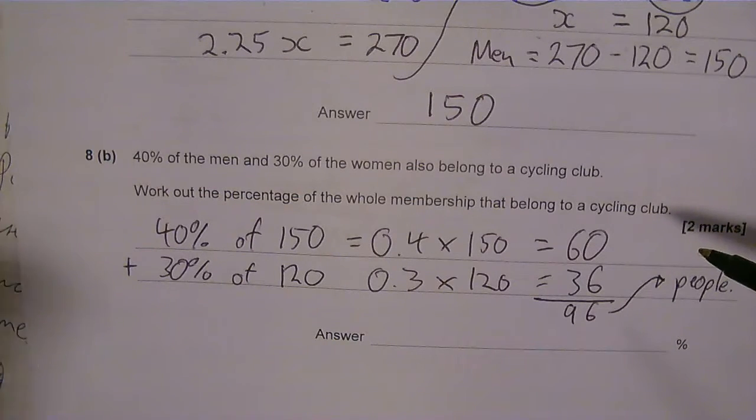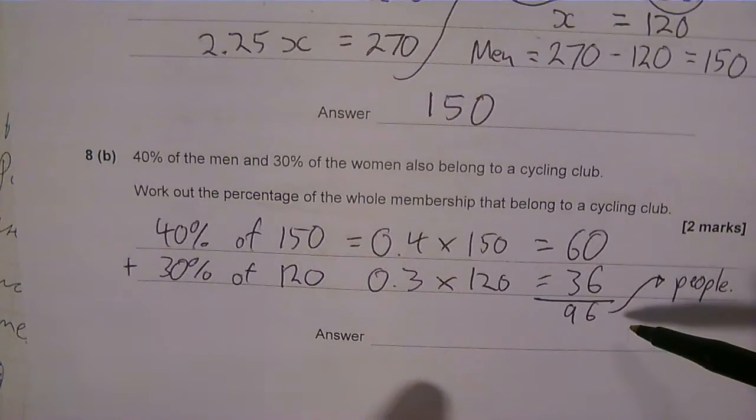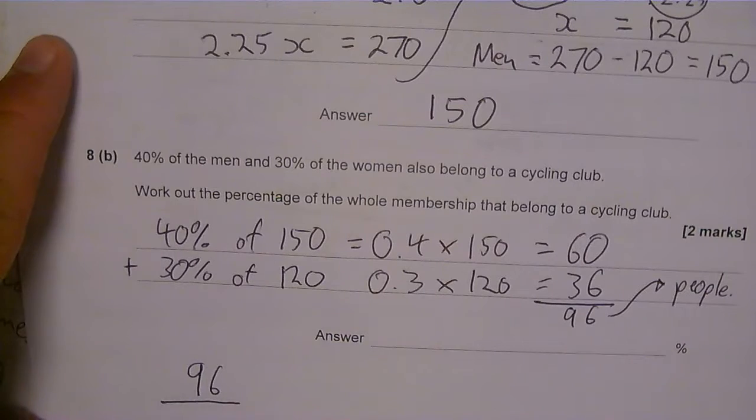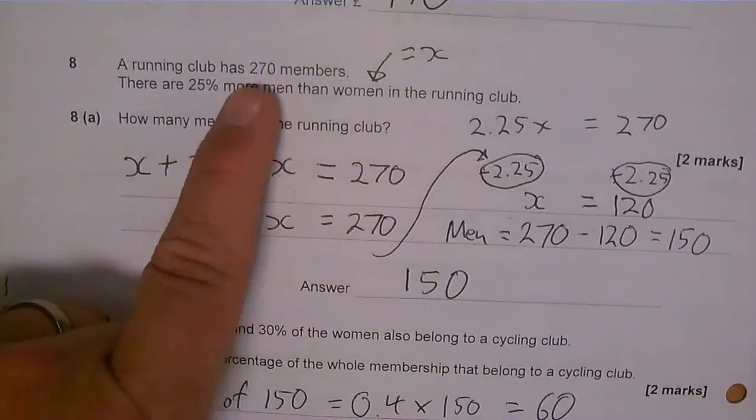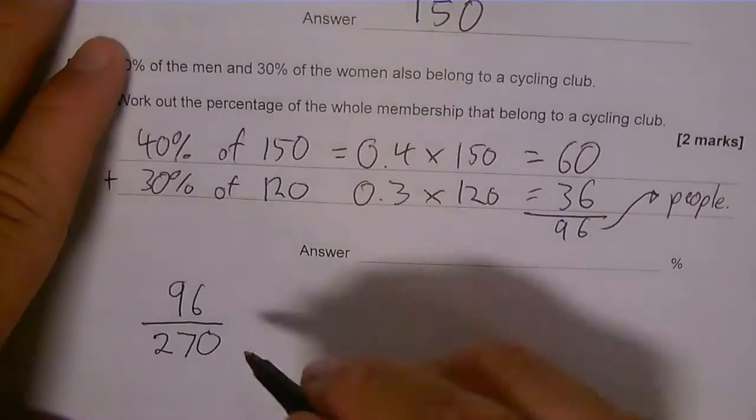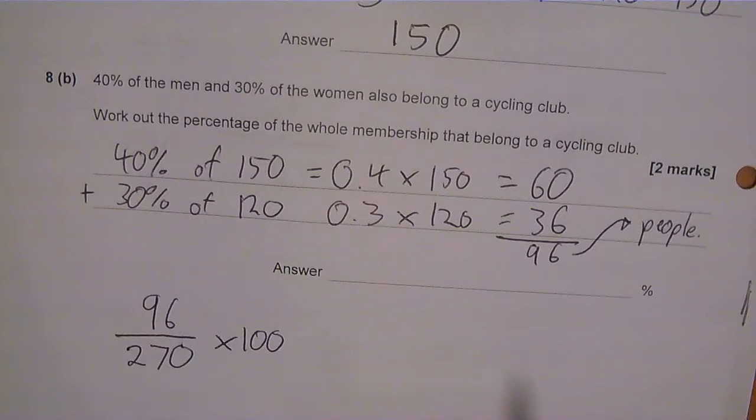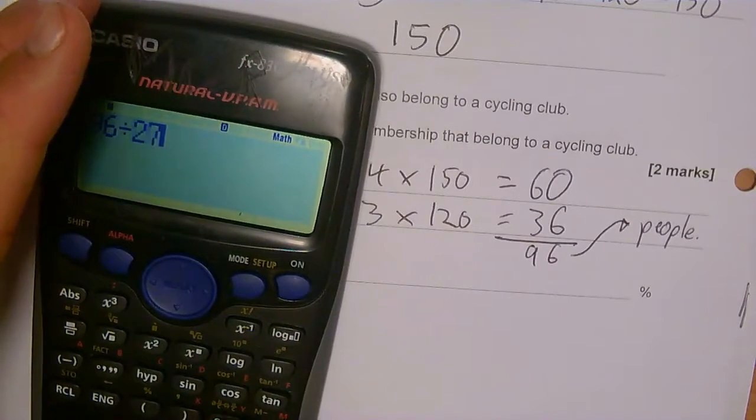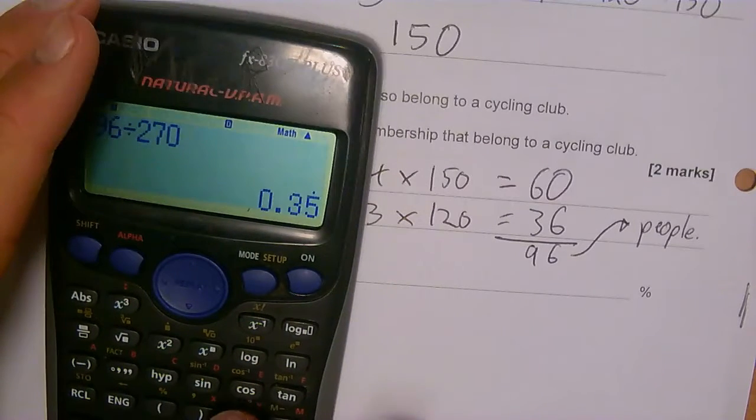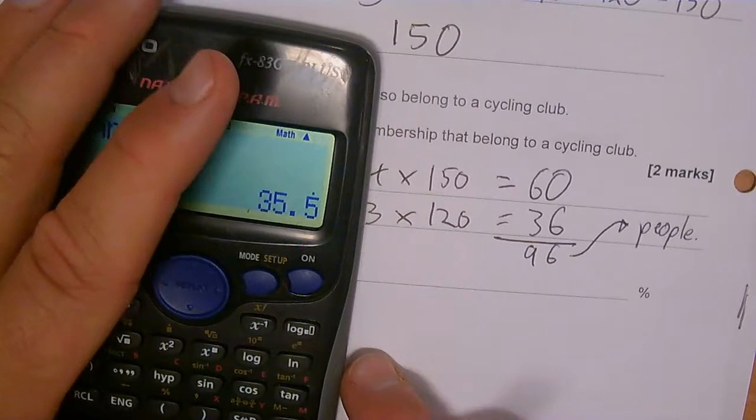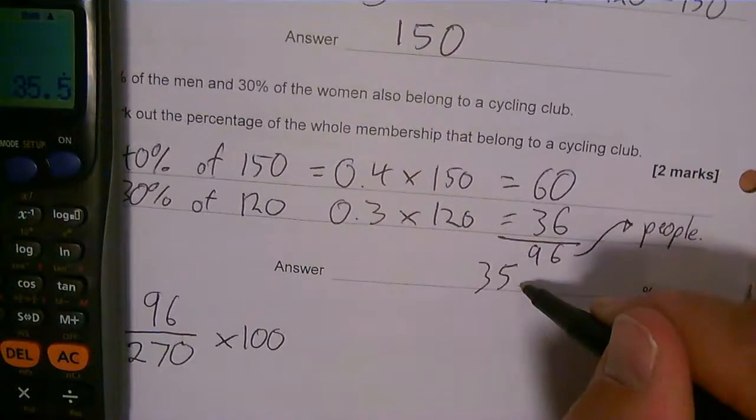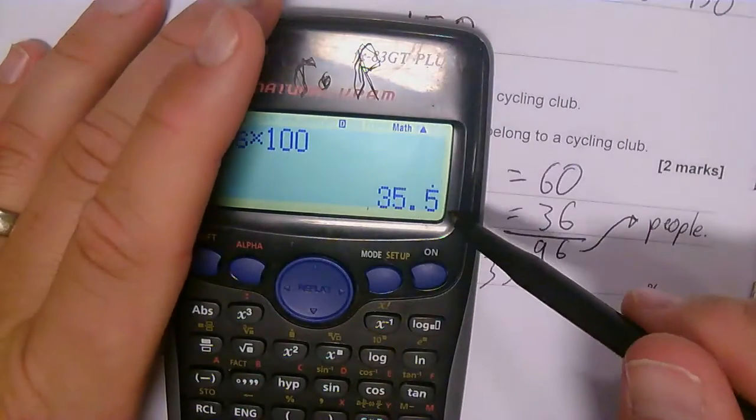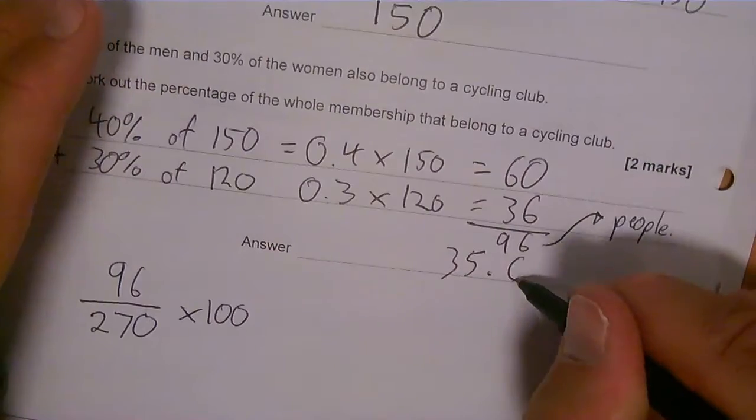So it's that as a percentage. I'm going to need to do 96 divided by my total membership of the club, which was 270. Remember, 270 members. And I'm going to times that by 100 to turn it into a percentage. So 96 divided by 270 times by 100 equals 35.5%. I'm going to say 35 point 5 recurring percent, so 35.6% to the nearest one decimal place.